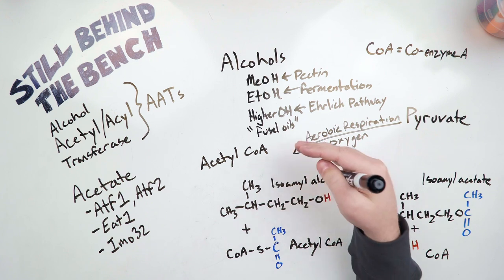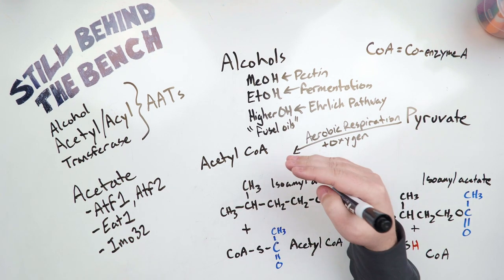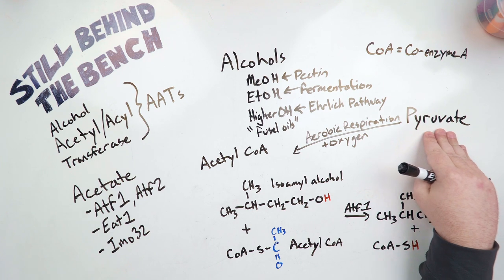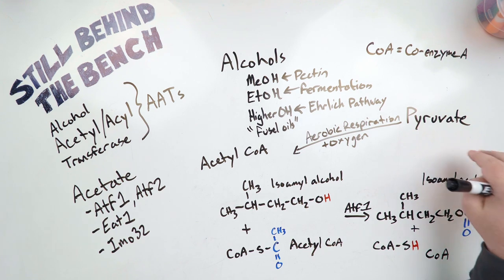Under aerobic conditions, when there is oxygen, that pyruvate gets turned into acetyl coenzyme A, and it goes into the citric acid cycle, which is also known as the TCA cycle or the Krebs cycle. If there is no oxygen present or low oxygen, that pyruvate could get turned into acetyl aldehyde, which then gets turned into ethanol.